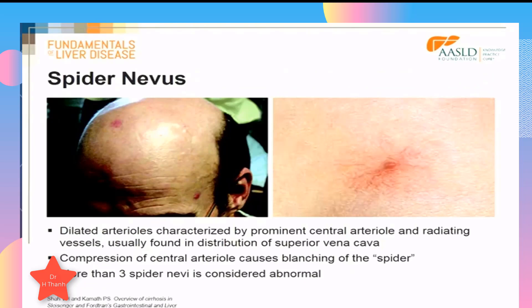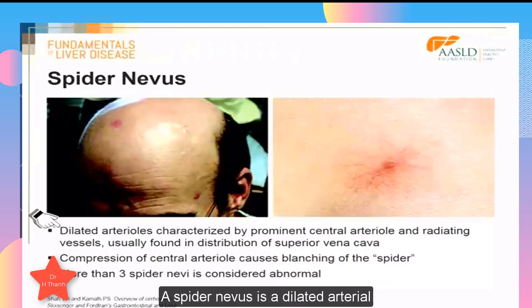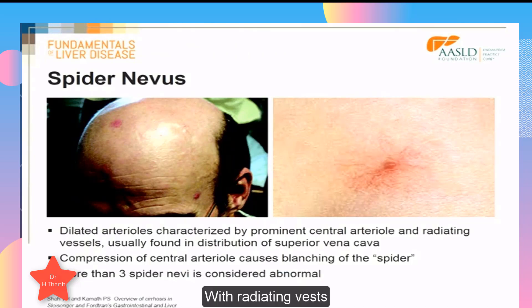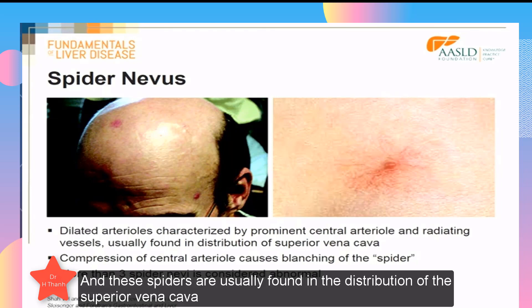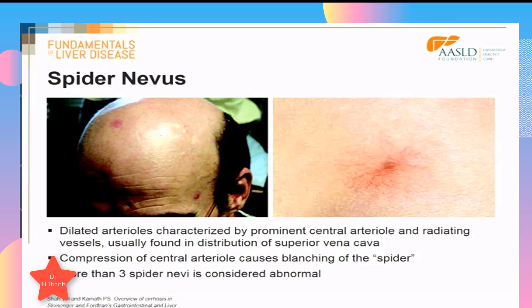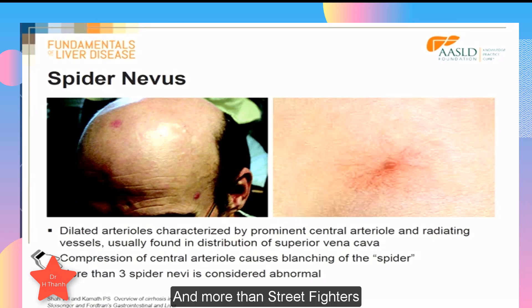A spider nevus is a dilated arteriole characterized by a prominent central arteriole, as seen in the panel on the right, with radiating vessels. Spiders are usually found in the distribution of the superior vena cava. If the central arteriole is compressed, there is blanching of the spider, and more than three spiders is considered abnormal.